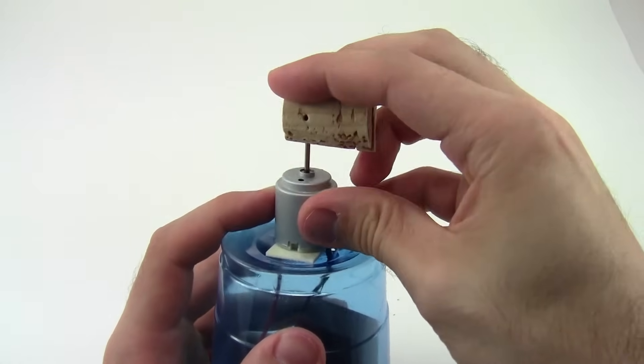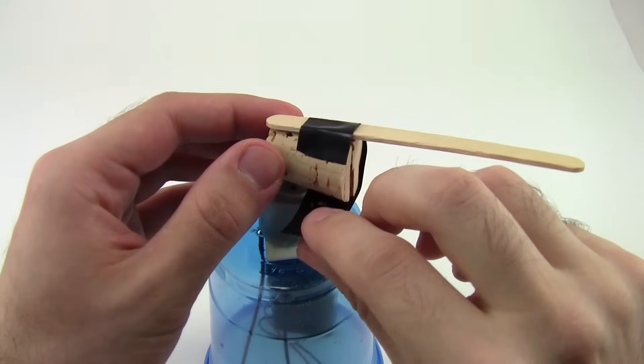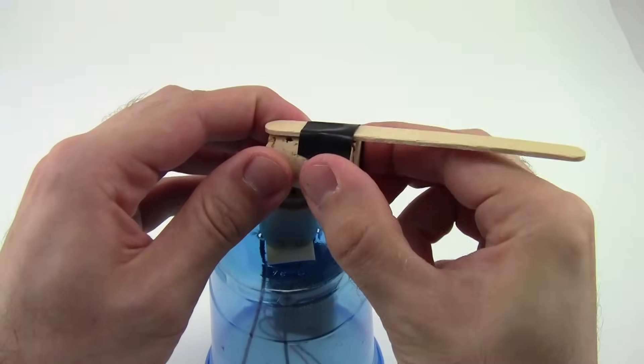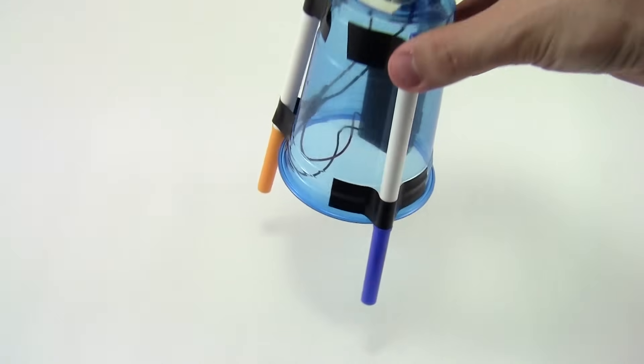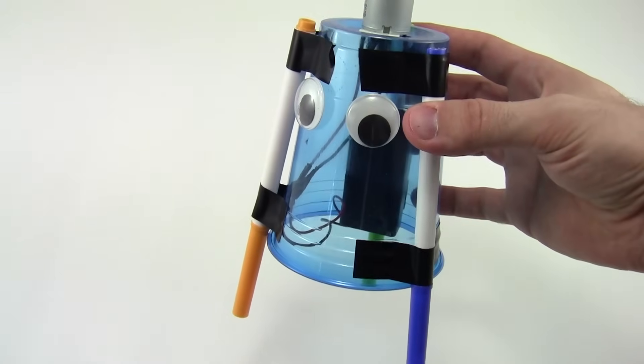Press a cork onto the motor shaft. Then, tape a popsicle stick to the cork. Tape three markers to the cup to serve as legs, and add optional decorations like googly eyes.